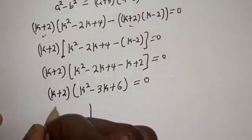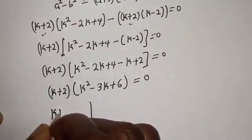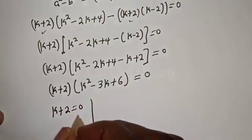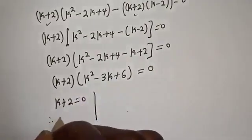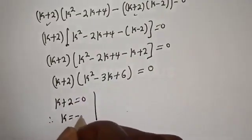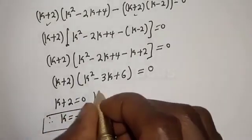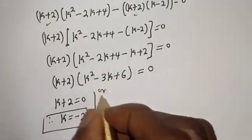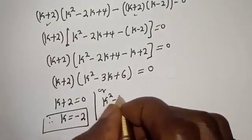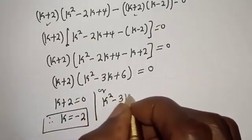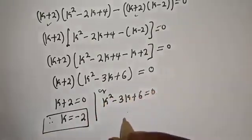There are two cases. The first case is k plus 2 is equal to 0, therefore k is equal to minus 2. Or the second case, k squared minus 3k plus 6 is equal to 0.